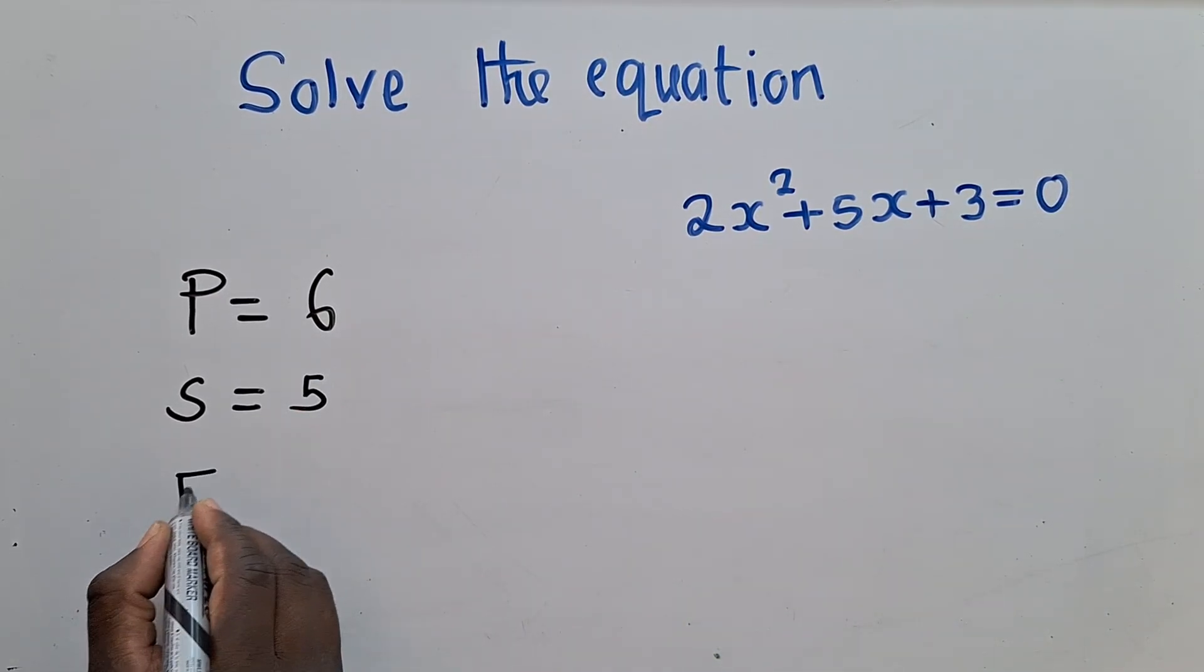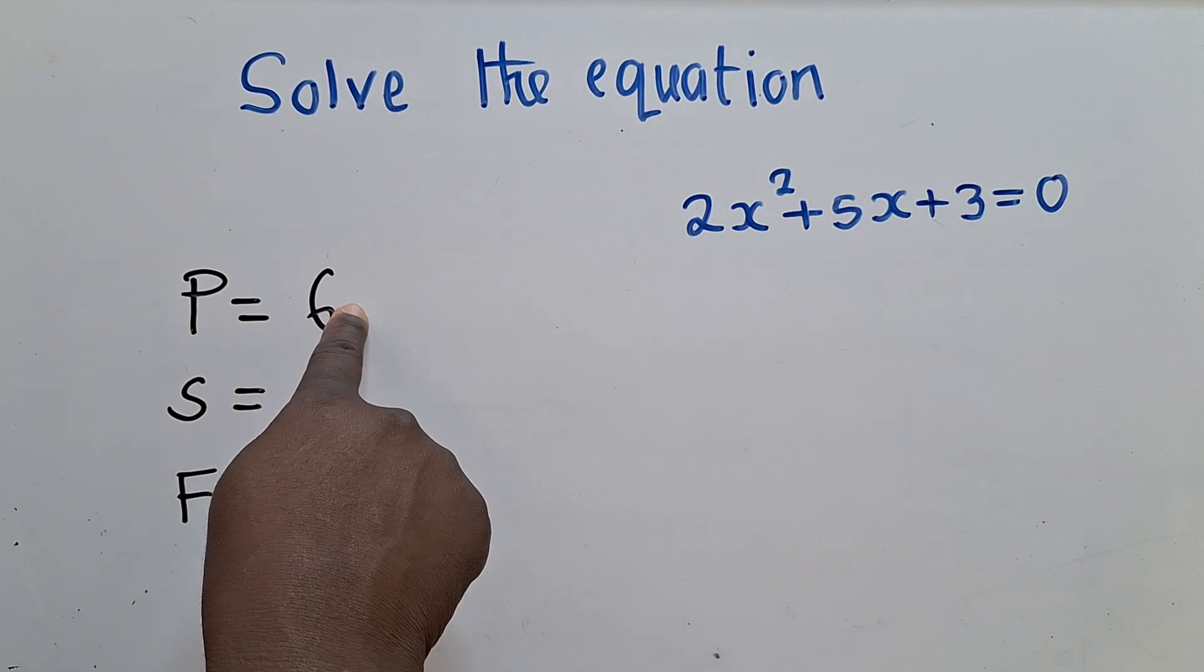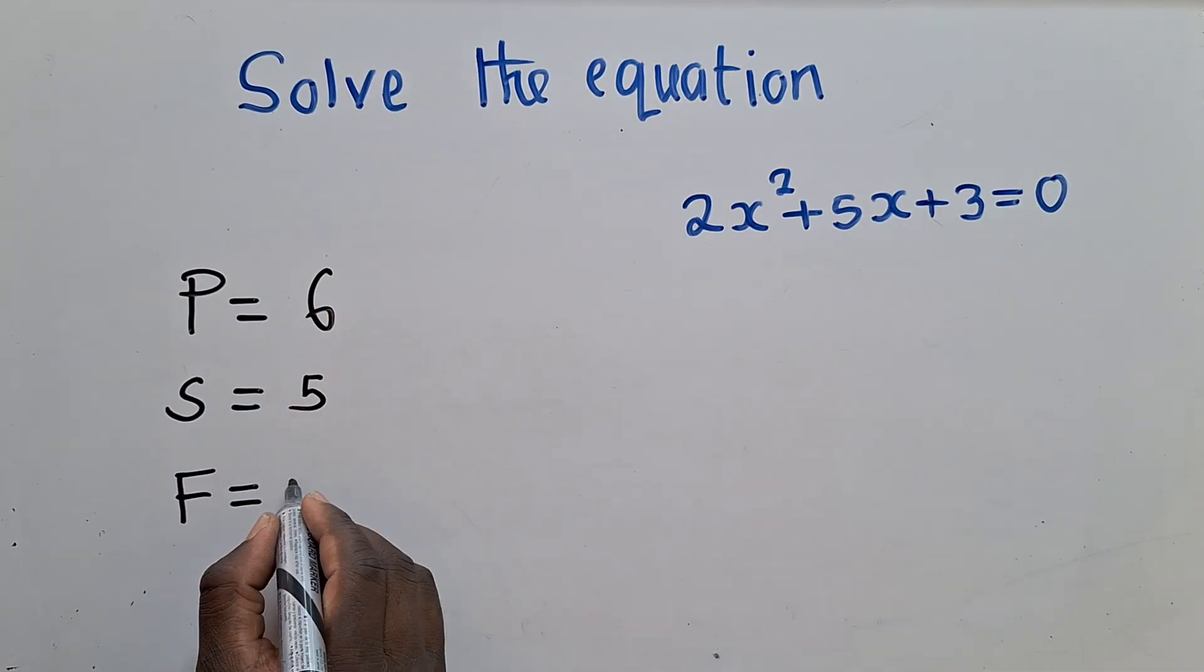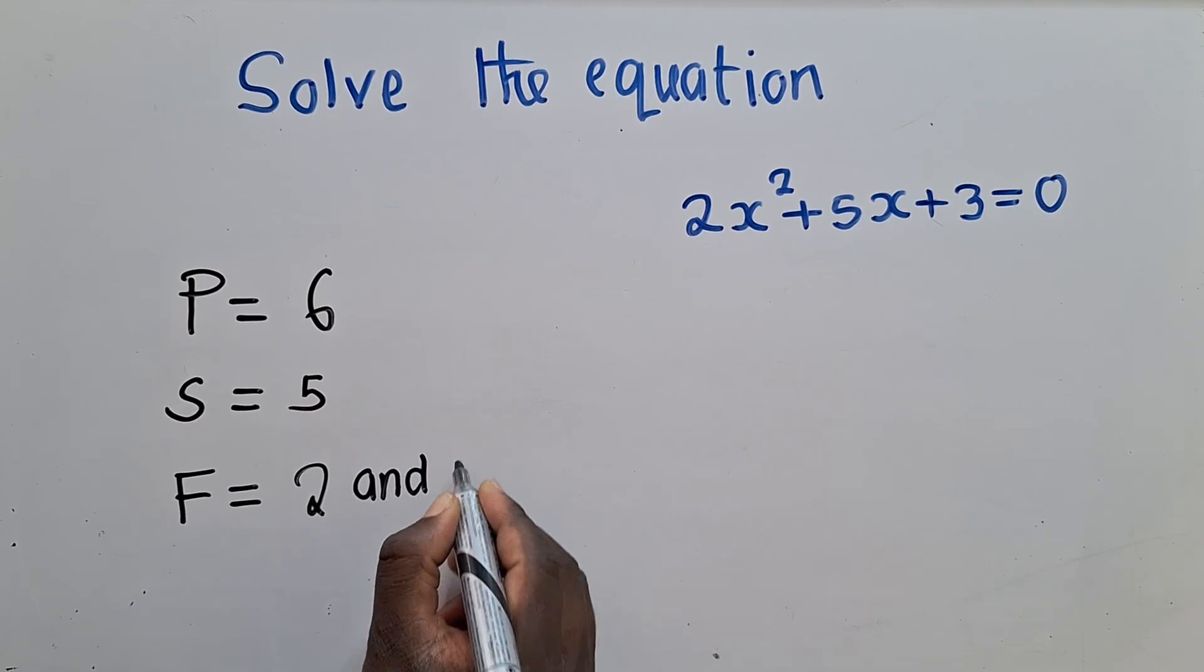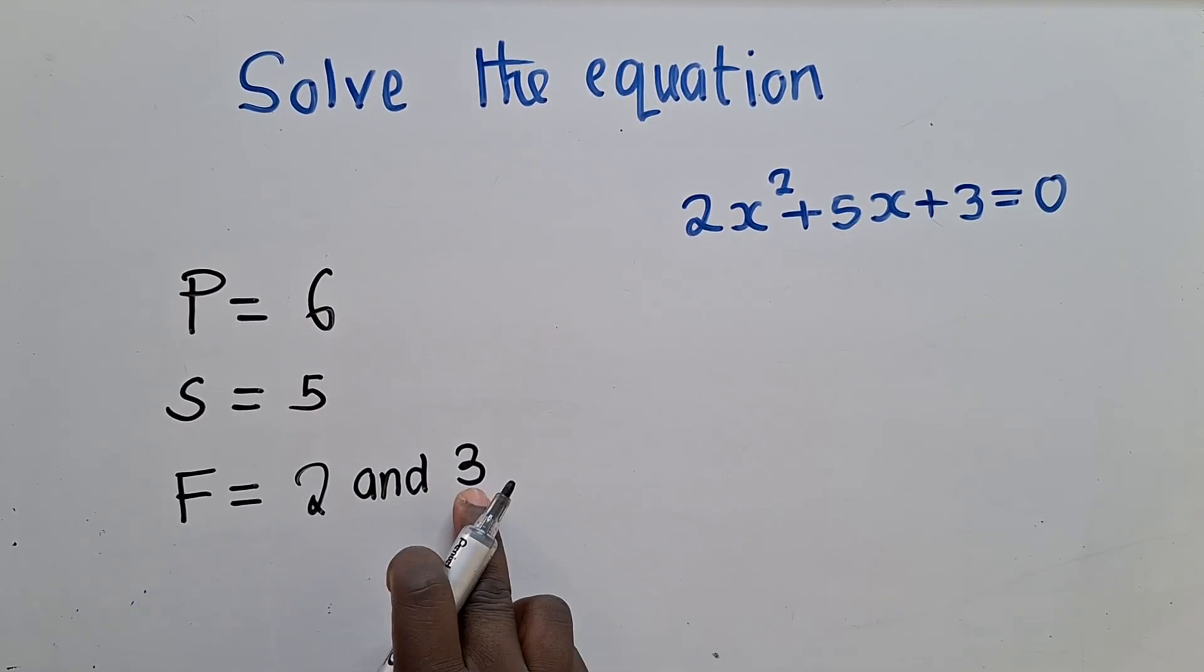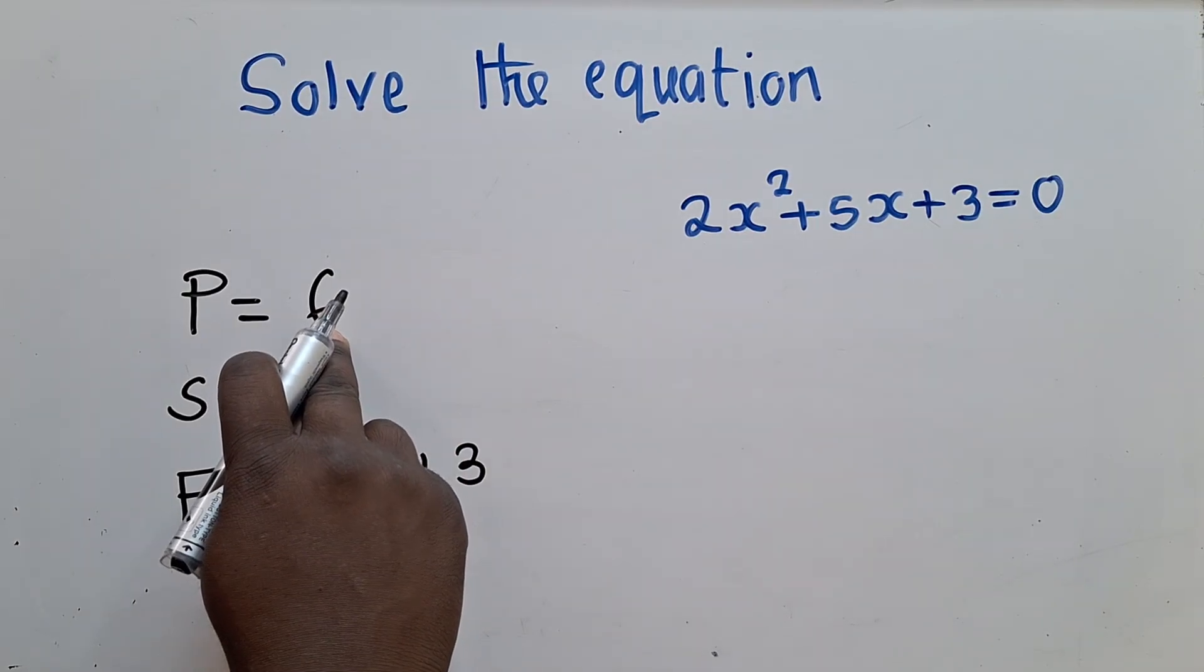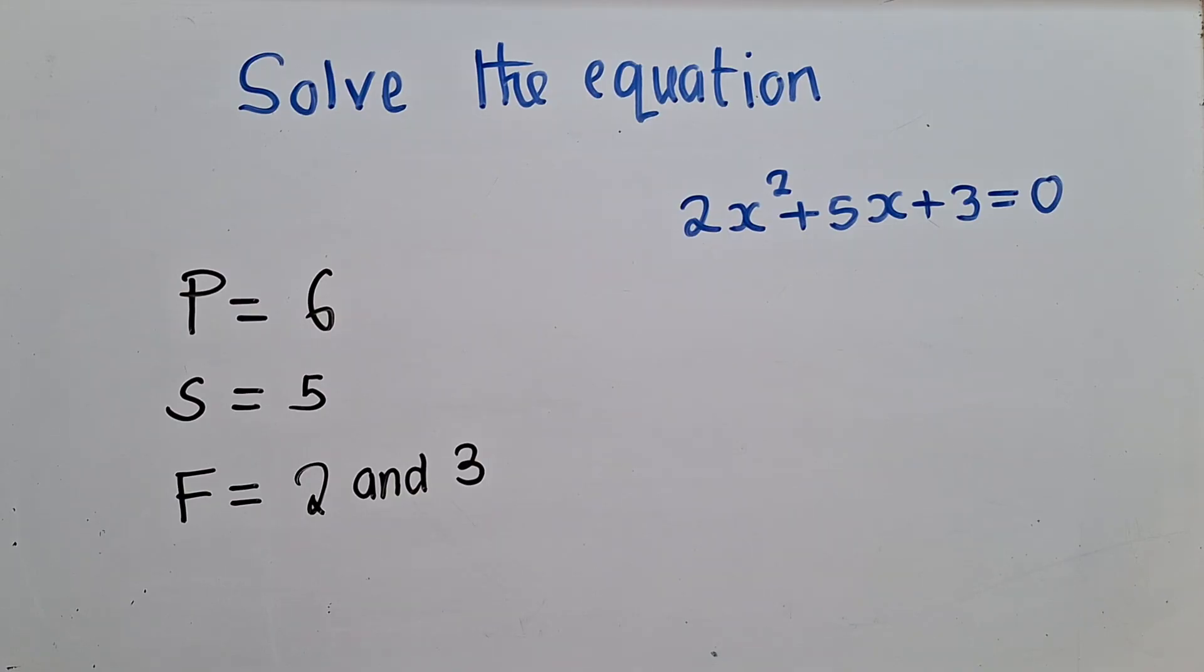Now for factors, these factors will be two numbers. When you multiply them, they give you 6. And when you add them, they give you 5. So those two numbers will be a 2 and a 3. Because when you multiply these two, you are getting a 6. And when you add them, you are getting a 5.